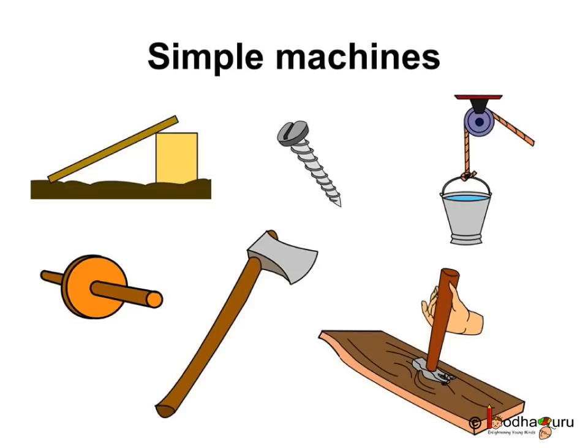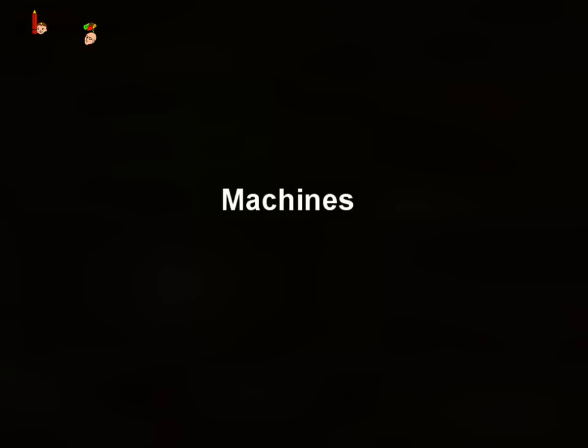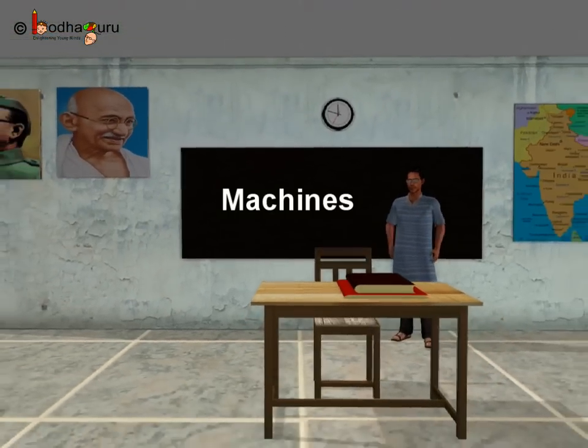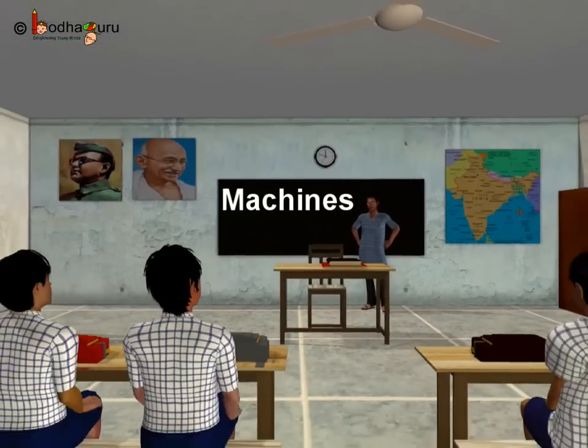So now you know that the simple things around us are actually machines that help us do a lot of work by applying less effort. All of these simple machines can be joined together to make complex machines like cranes. Machines are very friendly objects that help us in many ways in our day-to-day lives.